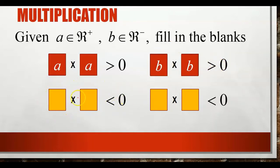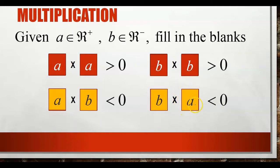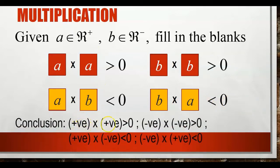For the third statement, A multiplied by B — positive times negative gives a negative number. And the fourth, B multiplied by A — negative times positive also gives a negative number. Conclusion: positive times positive gives positive; negative times negative gives positive; positive times negative gives negative; negative times positive gives negative.